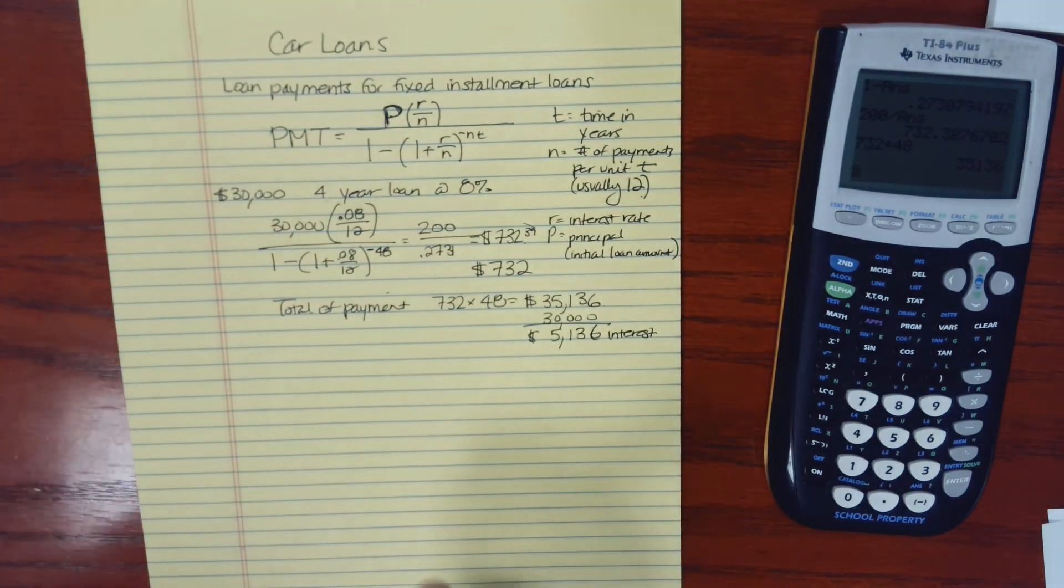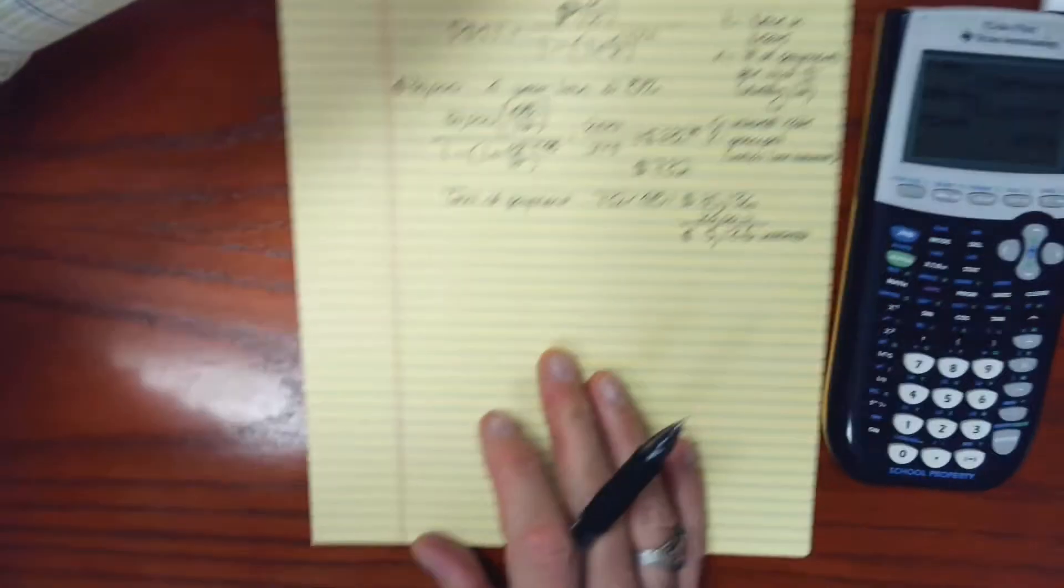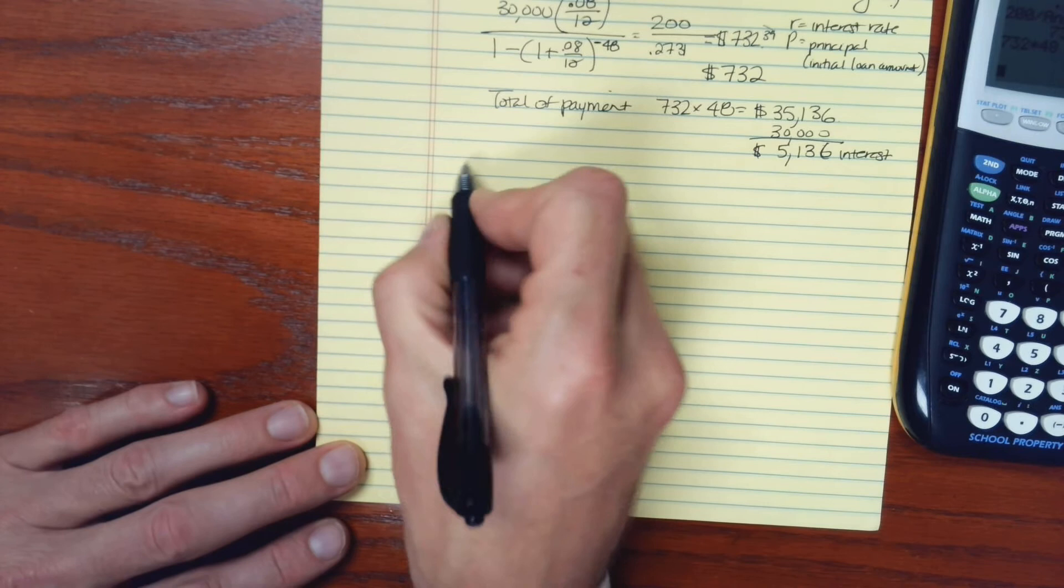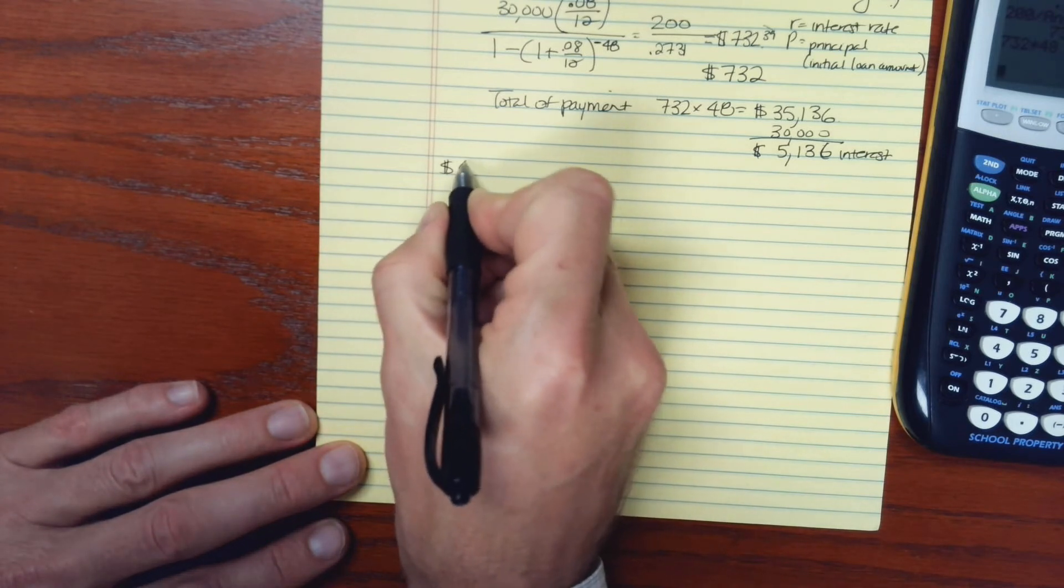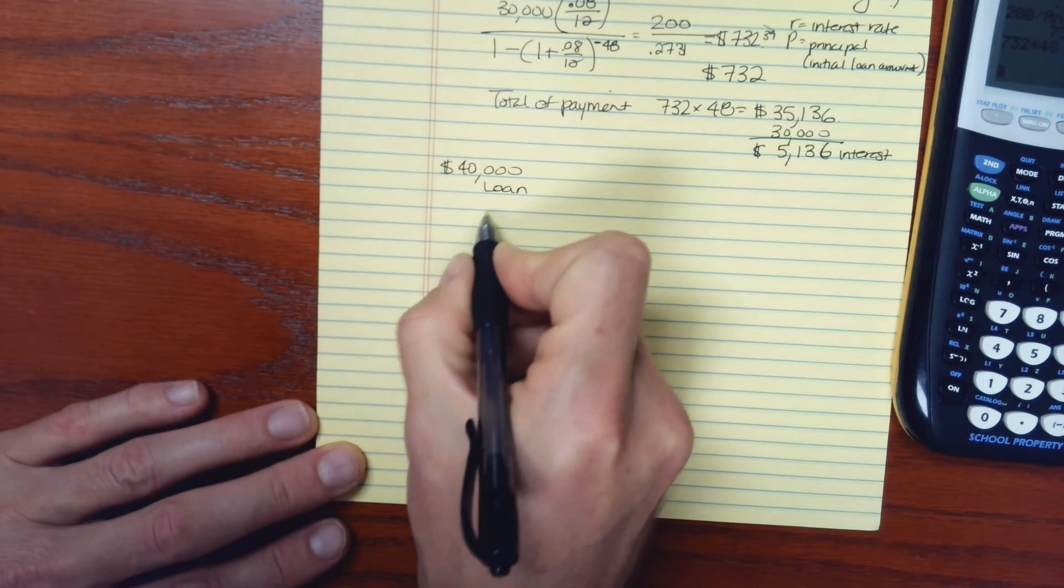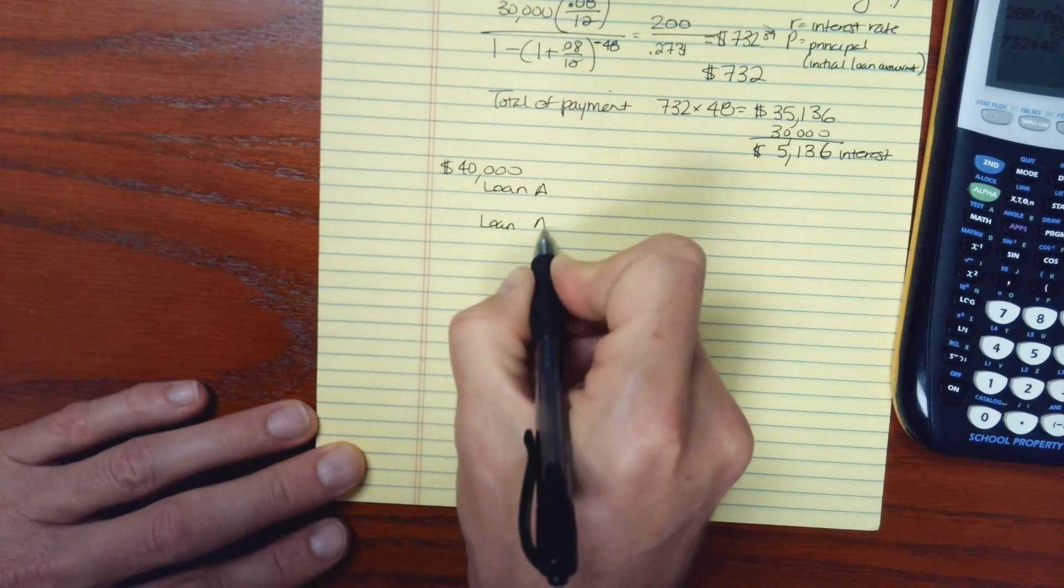Let's do another example. In this case, let's compare two loans. So let's say you want to buy a car because it's $40,000. And we have two loan options, loan A and loan B.